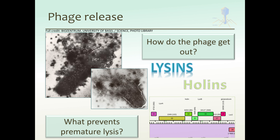Some things to think about: for example, lysins would be really dangerous to express early. What are some other reasons that the order of gene expression — early, middle, and late — is so critical to the success of this life cycle? In class on Friday, we'll talk about how the phage controls early, middle, and late gene expression, and how those genes are turned on at the appropriate times during the life cycle.